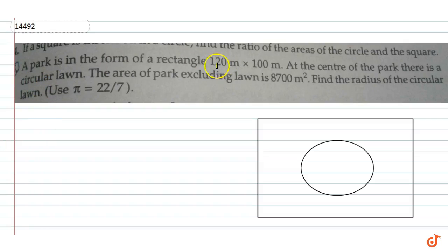A park is in the form of a rectangle 120 meter by 100 meter. At the center of the park there is a circular lawn. The area of park excluding lawn is 8700 meter square. Find the radius of the circular lawn.